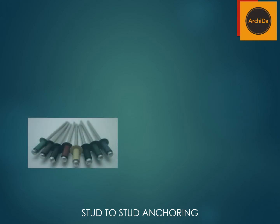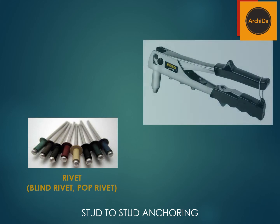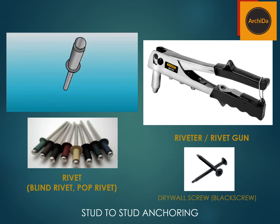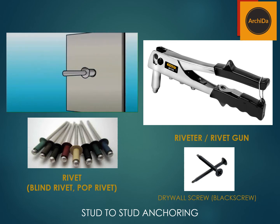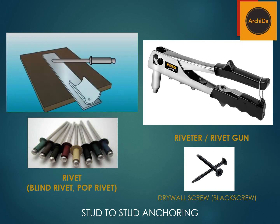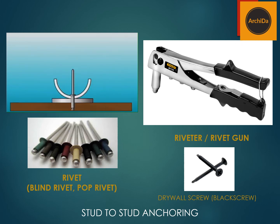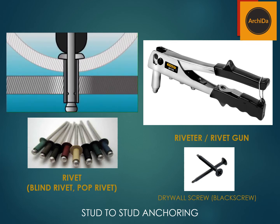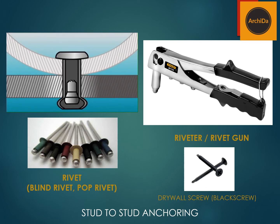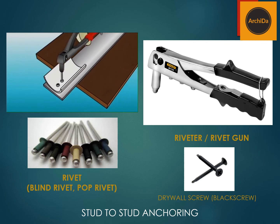For stud-to-stud anchoring, you use a rivet — either called a blind rivet or pop rivet — installed with a riveter gun. You can also use a drywall screw or black screw. A rivet has a shank and a mandrel. The rivet is inserted in a hole drilled through two materials. A rivet gun pulls on the top of the mandrel, expanding the shank and clamping the two materials tightly together. The force from the gun then snaps off the mandrel head at a pre-made breakpoint — it is called a pop rivet because of the sound the head makes when it snaps off.